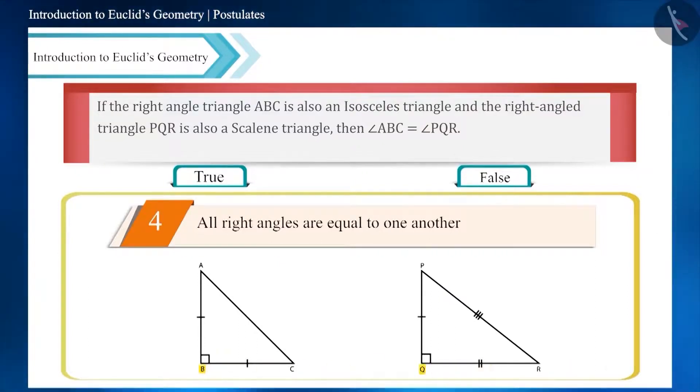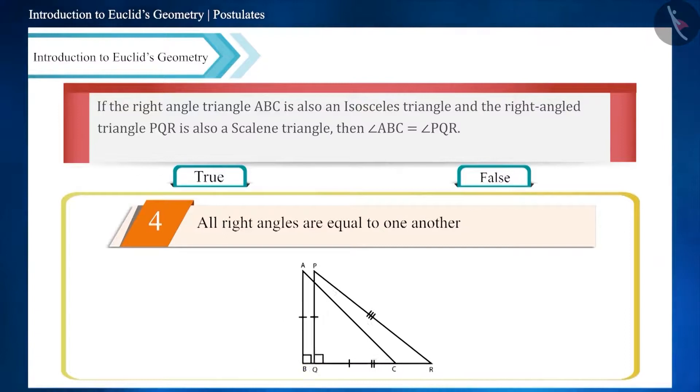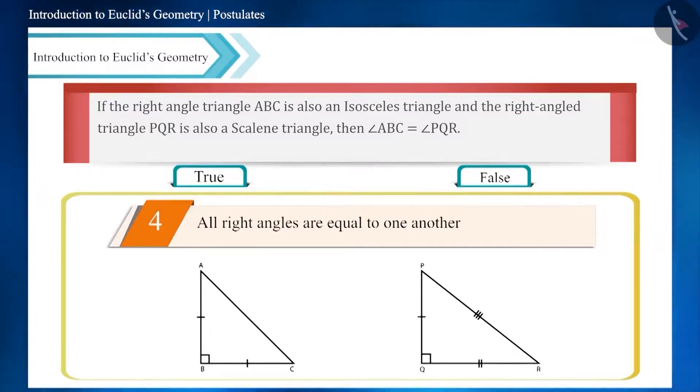one on top of each other with angle B and angle Q overlapping each other, then you can see that the angles are equal to each other even if the triangles are not congruent to each other. Therefore the given statement is true.